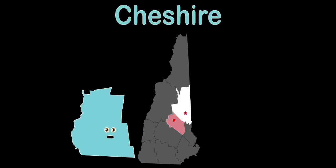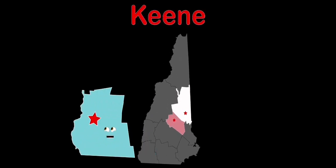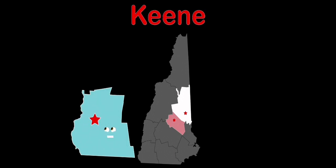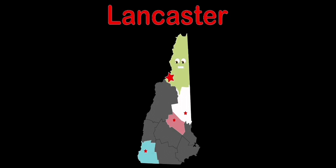Cheshire County is on the southwestern part of New Hampshire, bordering Vermont and Massachusetts, of that I am sure. Keene is the name of my county seat, it's located just about in the middle of Cheshire, that is me.